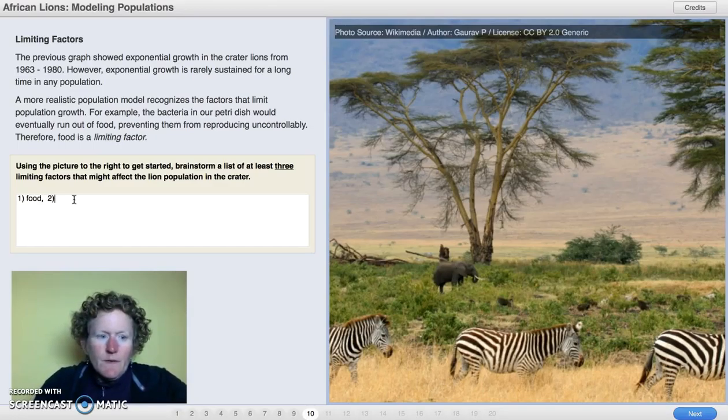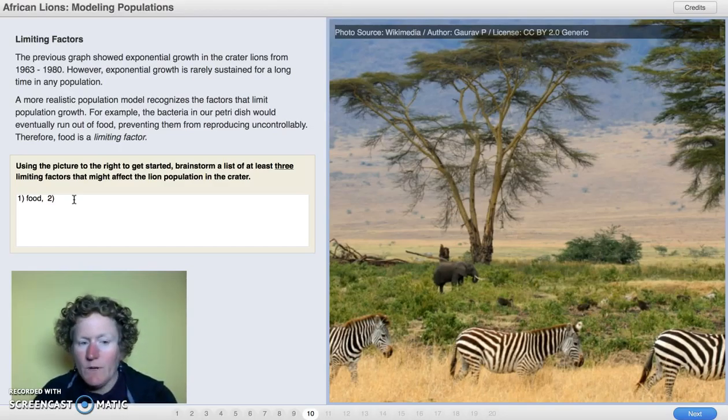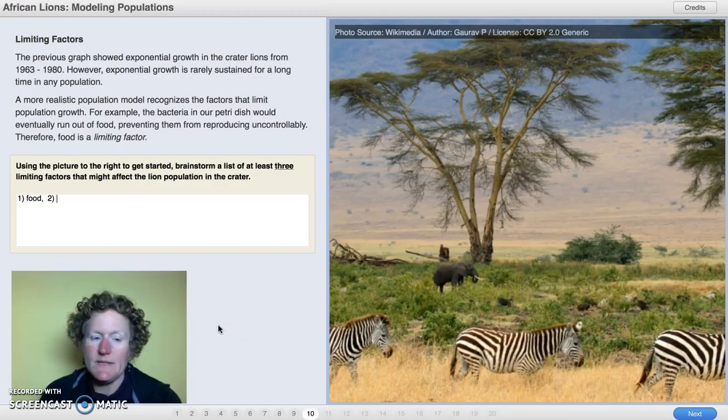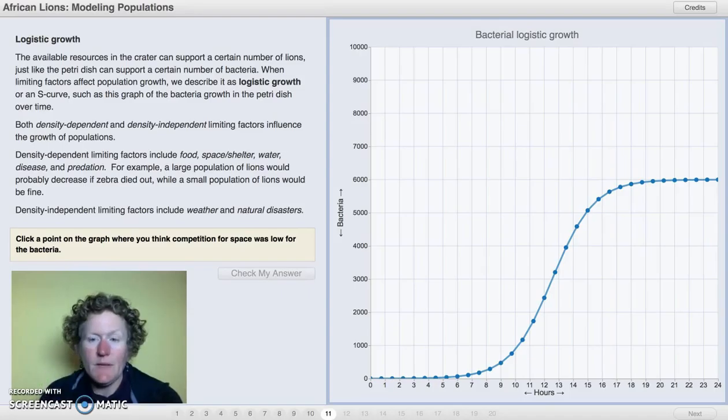The second thing you can think about is where do lions, zebras, elephants, and other animals that live in the Serengeti Plain, where it's pretty dry, where do they have to all go at least once every couple of days? Where do you have to go to tank up in the summer if you sweat a lot? You get kind of thirsty? Think about it. What's a limiting factor for animals in a desert or in a very dry environment?